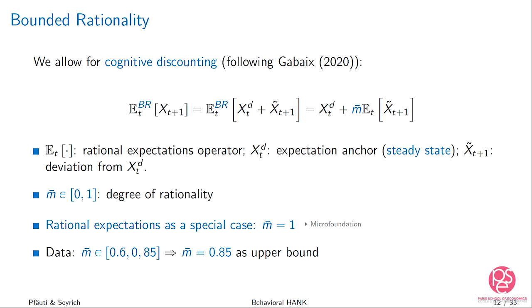One way to think about cognitive discounting: you get a noisy signal about the future and because it's noisy you don't put full weight on it, so you discount it. In economic terms, you underreact to news about the future. There is quite a lot of evidence that household expectations tend to underreact to macro news. Setting m to one returns us to rational expectations — rational expectations is a special case of this behavioral assumption. The data suggests underreaction in the range of 0.6 to 0.85, and we use 0.85 as our benchmark — a mild deviation from rational expectations.